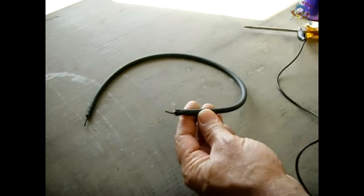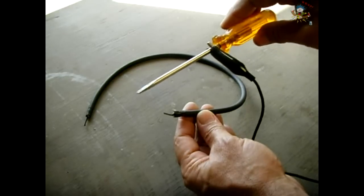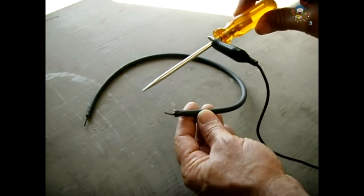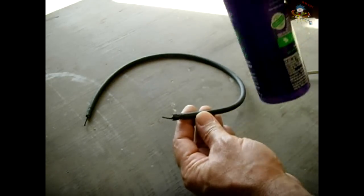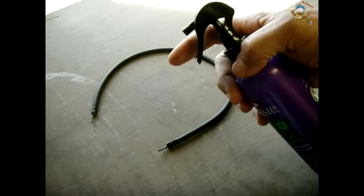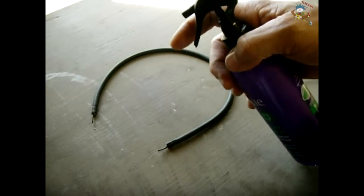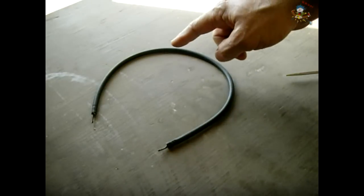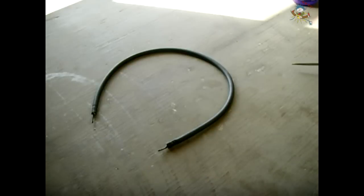Once this is onto the engine block and you have the screwdriver all ready with the jumper wire attached, take a spray bottle like this and you're going to spray a mist of water on top of all the insulation of the spark plug wires.